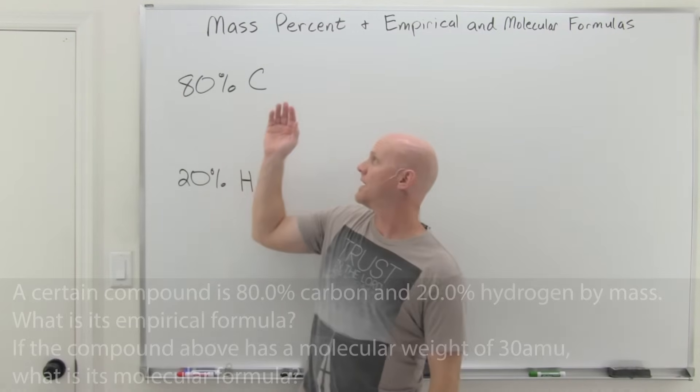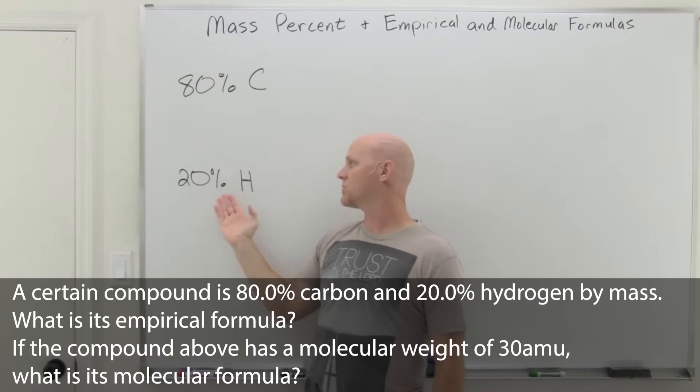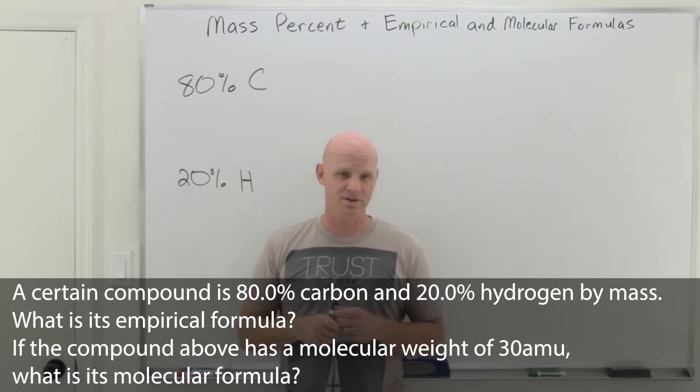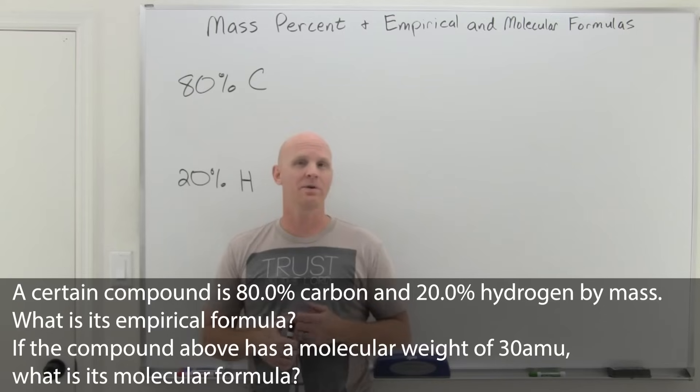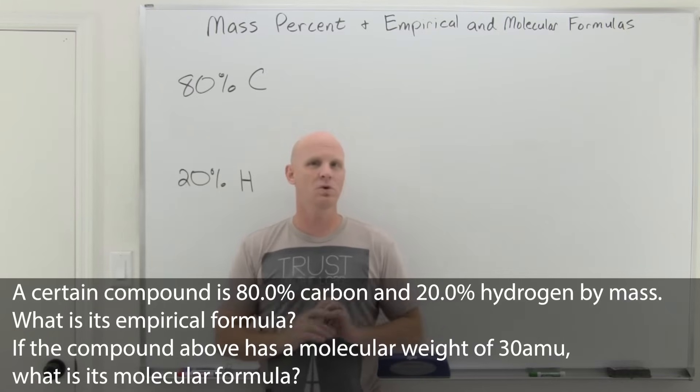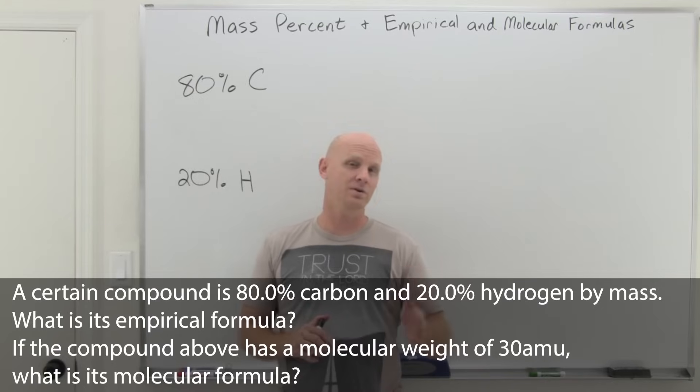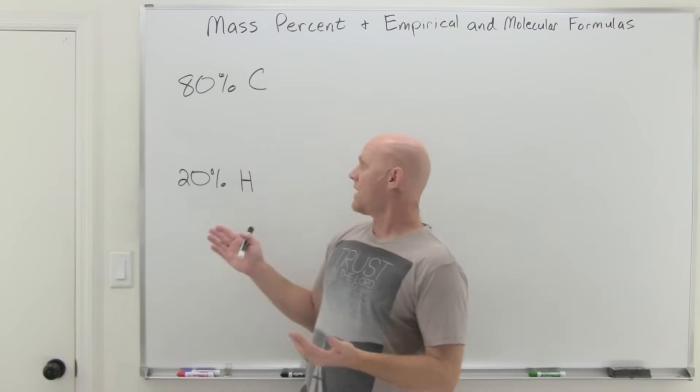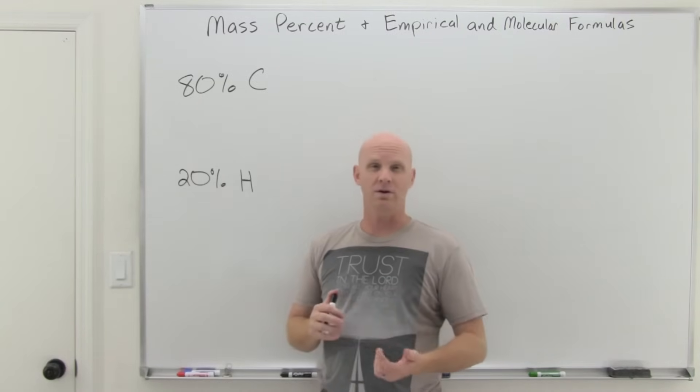In the next question, we've got a compound that's given as being 80% carbon by mass and 20% hydrogen by mass. And the question is, what is its empirical formula? That's the first question. After figuring out its empirical formula, we're then told that the molecular weight of this compound is 30 AMUs, or we could have been told that the molar mass was 30 grams per mole. Same diff. And then we're asked to find further the molecular formula. Now, it turns out from mass percents alone, you can get the empirical formula. On top of that, though, you need a molecular weight or molar mass to then take that empirical formula and turn it into a molecular formula.